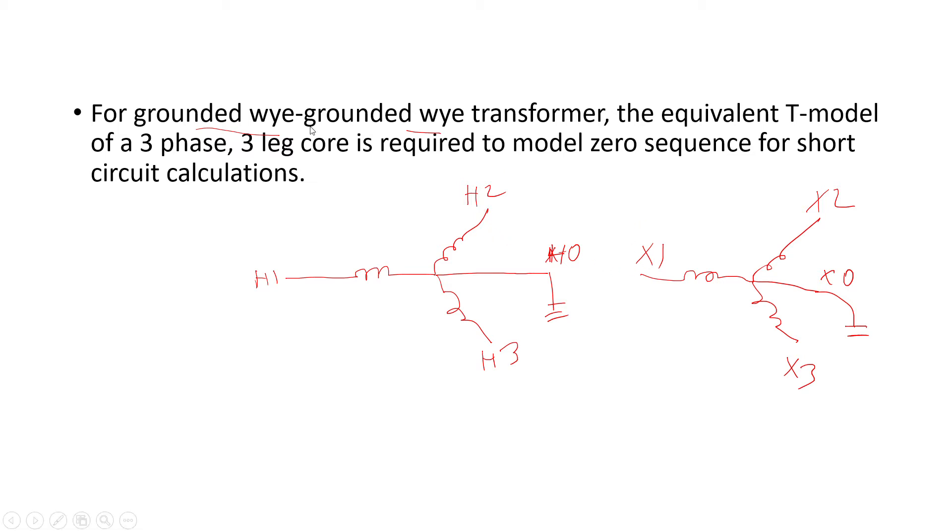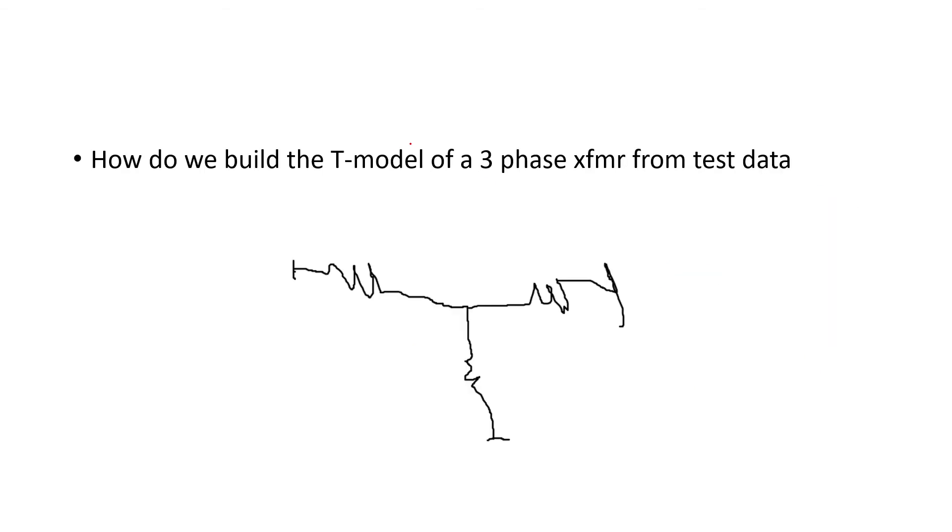So this might be 138 kV, this could be 12 kV or 13 kV or something like that. The equivalent when you have a grounded Y grounded Y transformer, the equivalent T model of a three phase three leg core is required to model the zero sequence for short circuit purposes. If you remember from part one, which I recommend watching.